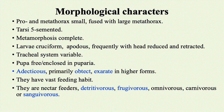Tarsi are five-segmented. Metamorphosis is complete, meaning the life cycle consists of four stages: eggs, larvae, pupa, and the imago or adult. The larvae are mainly vermiform and apodous, that is without legs, and are frequently with the head reduced and retracted. The tracheal system — the system of respiration in insects — is variable in dipterans.